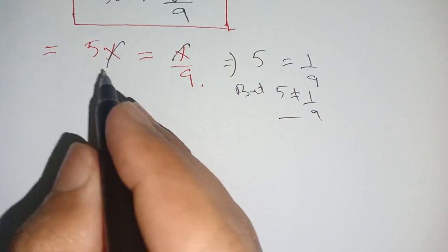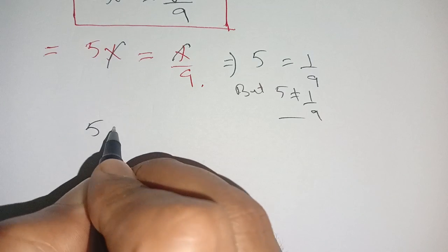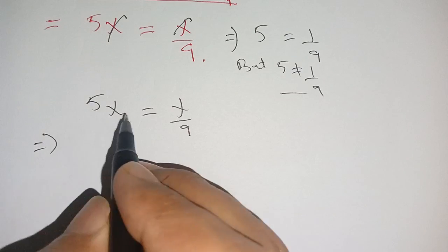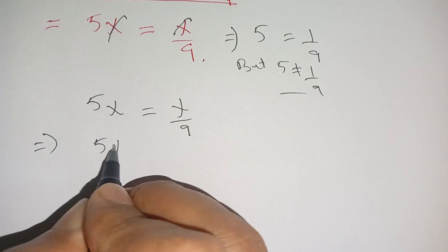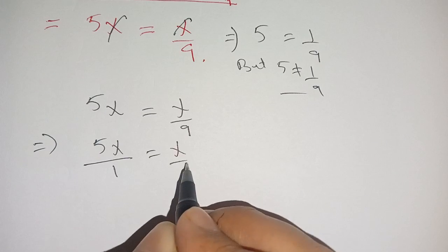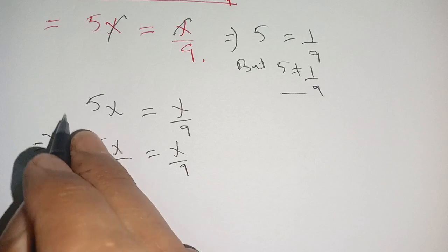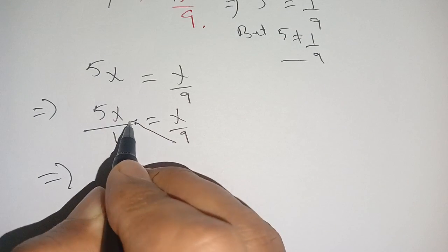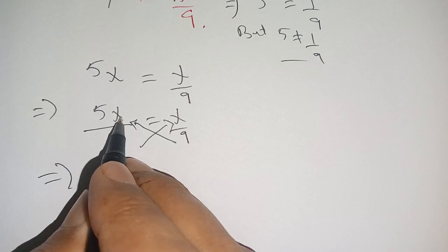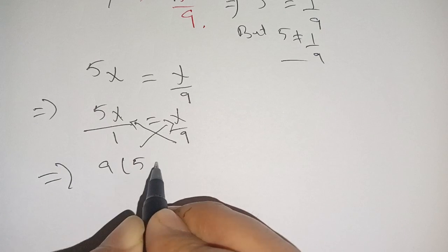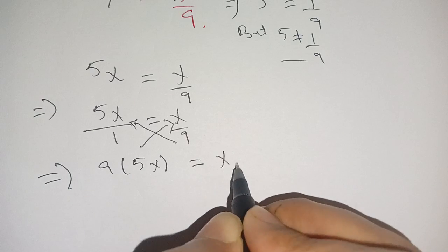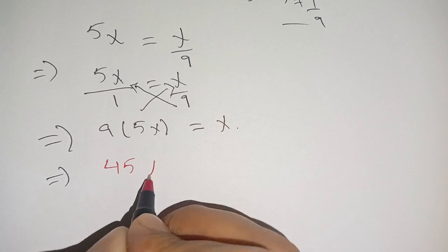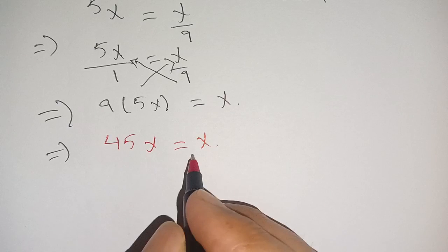The correct method to solve this equation is: 5 times x is equal to x divided by 9. We rewrite the left side as a fraction: 5x divided by 1 is equal to x divided by 9. Now we apply cross multiplication: 9 times 5x equals 1 times x, which gives us 45x is equal to x.